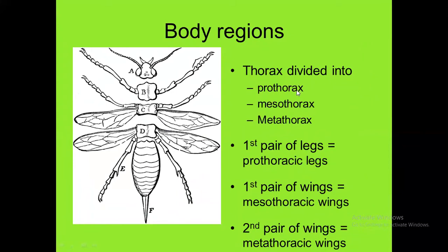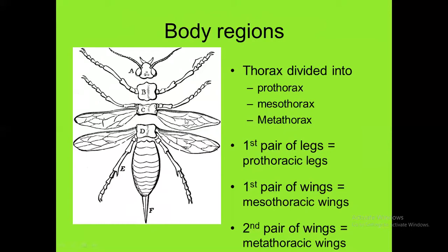The thorax is divided into three regions: prothorax, mesothorax, and metathorax. The first pair of legs is attached to the prothorax region, so it is called the prothoracic legs. The second pair of legs is attached to the mesothorax region, and the last pair is attached to the metathorax region. The first pair of wings is attached to the mesothorax region, and the second pair of wings is attached to the metathorax region.